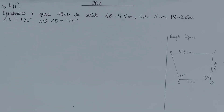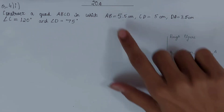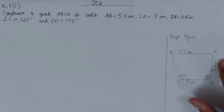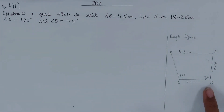Using these three sides and two angles, we have to construct quadrilateral ABCD. I have made a rough figure showing ABCD with AB = 5.5 cm, CD = 5 cm, DA = 3.5 cm, angle C = 120°, and angle D = 75°. Now let's construct it on paper.